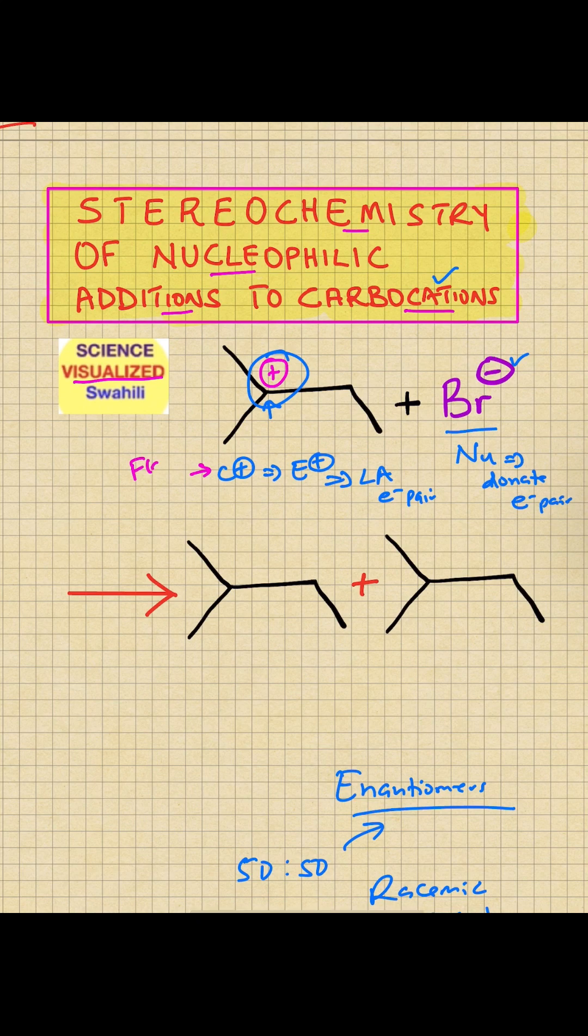Carbocations are flat or we say planar. That means this carbon, that carbon, that carbon and that carbon are all on the same plane, and therefore the nucleophile can add from the top or from the bottom. So let's go ahead and see what product we get.